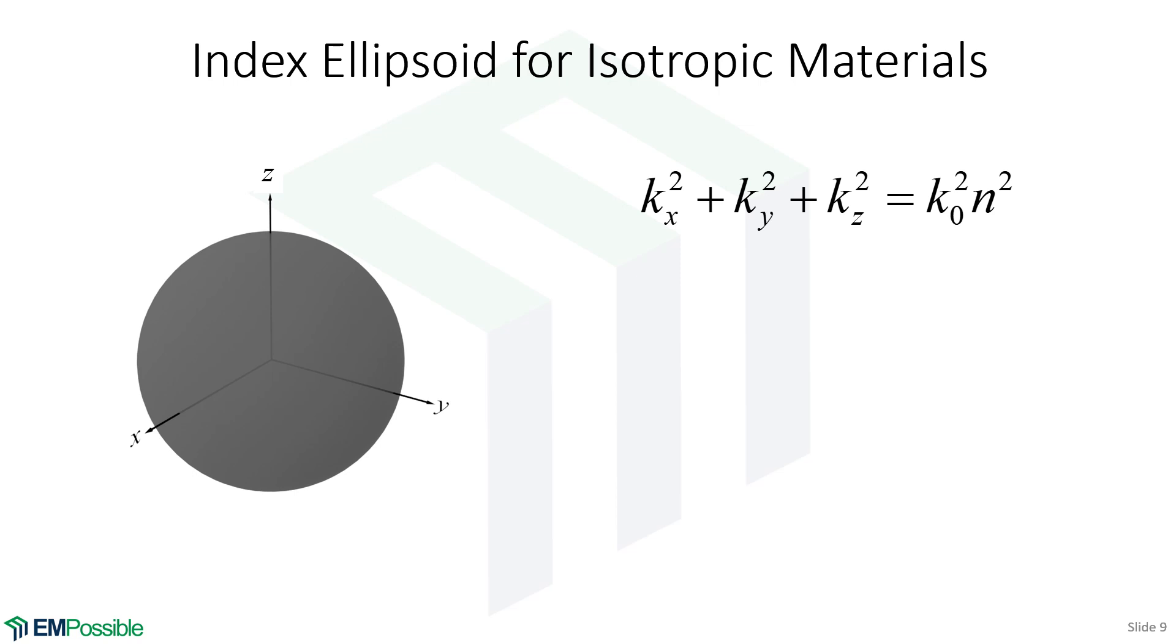So here is just kind of a recap of our index ellipsoid for isotropic materials. It's a sphere. Kind of boring. But what would happen inside of an anisotropic material? Remember what an anisotropic material is. Depending what direction your electric field is oscillating, it experiences a different permittivity. And the same thing for the magnetic field, might experience a different permeability, depending what direction it's oscillating. It turns out, these aren't necessarily spheres anymore.